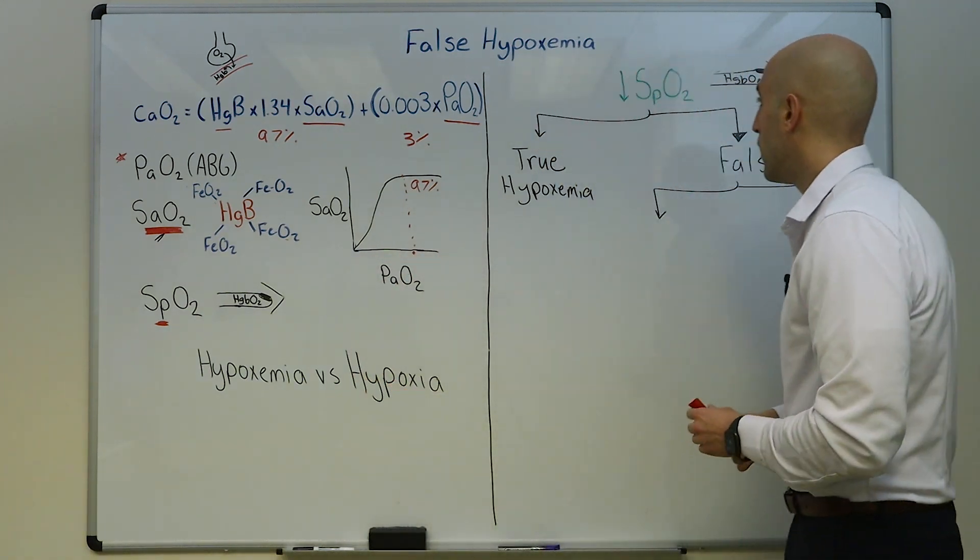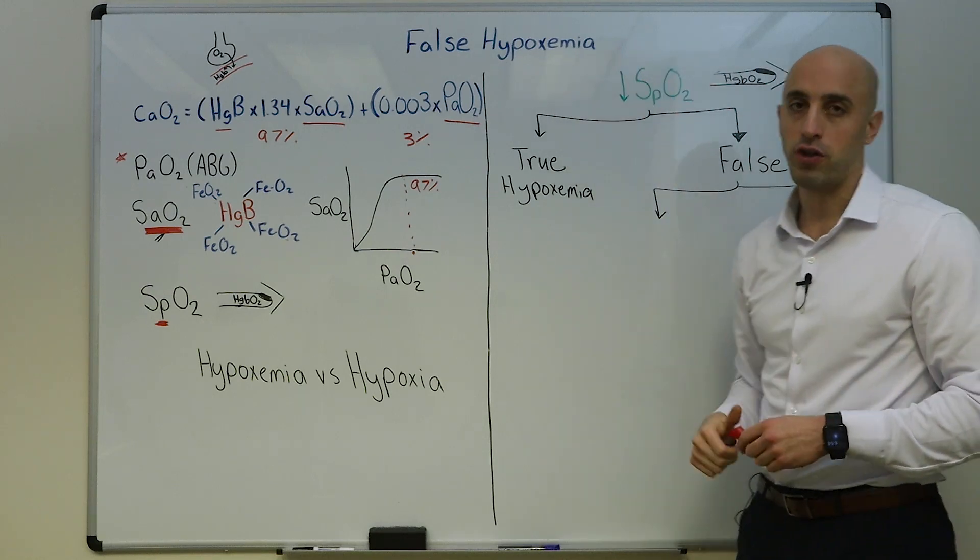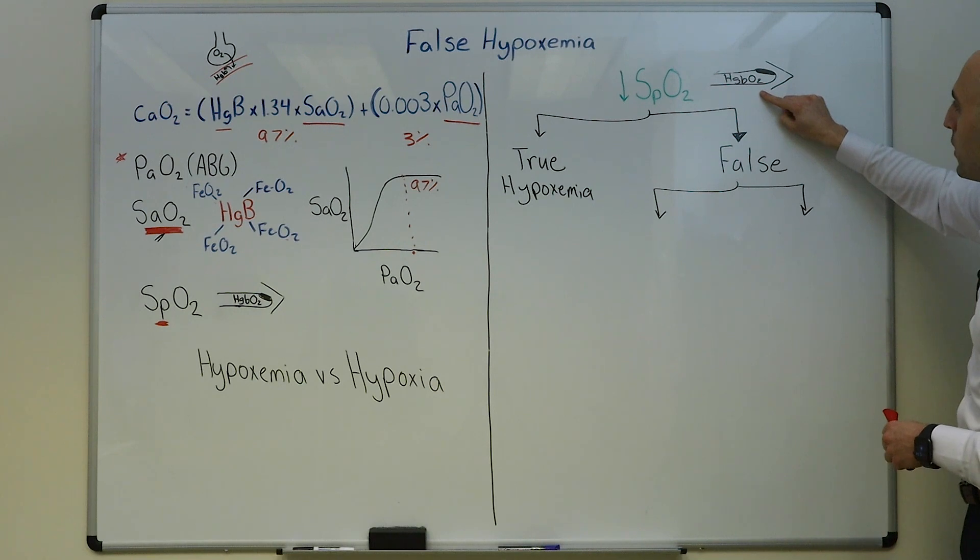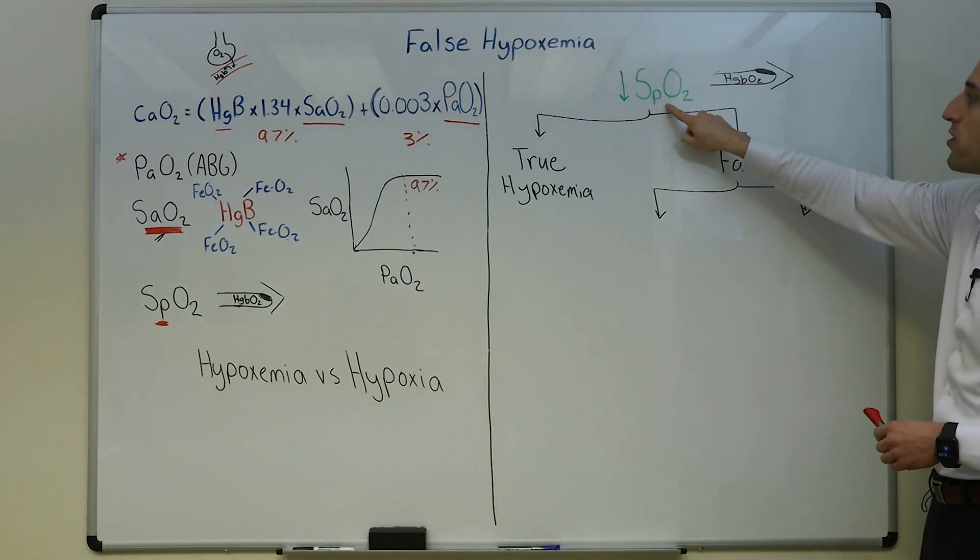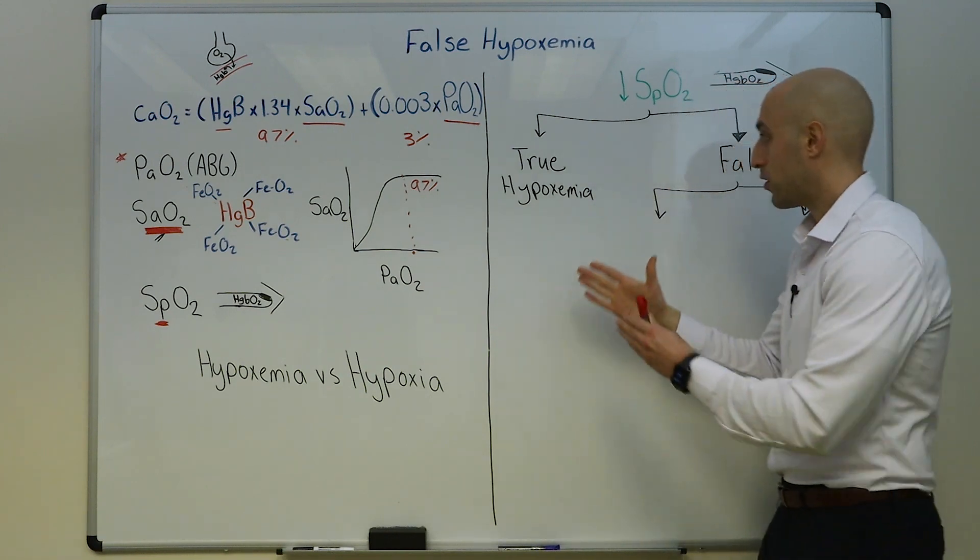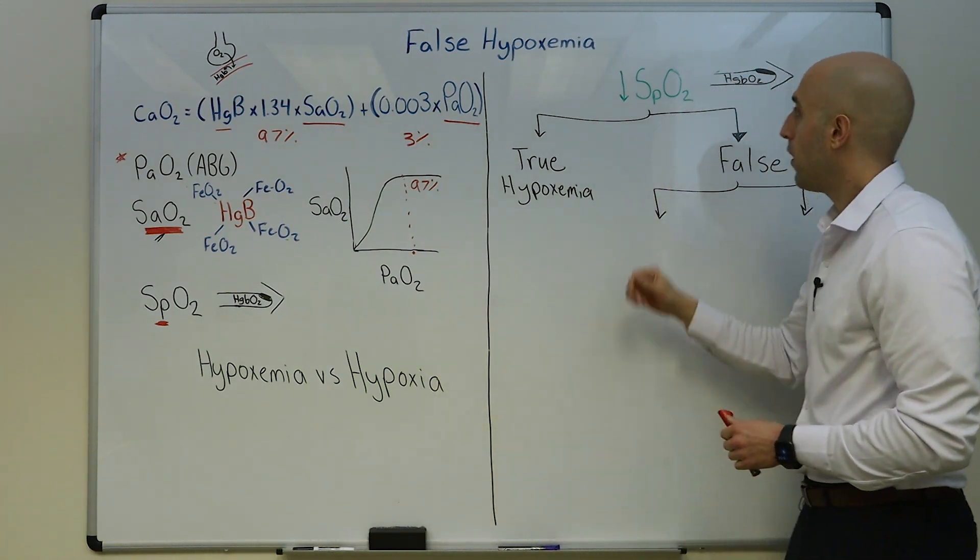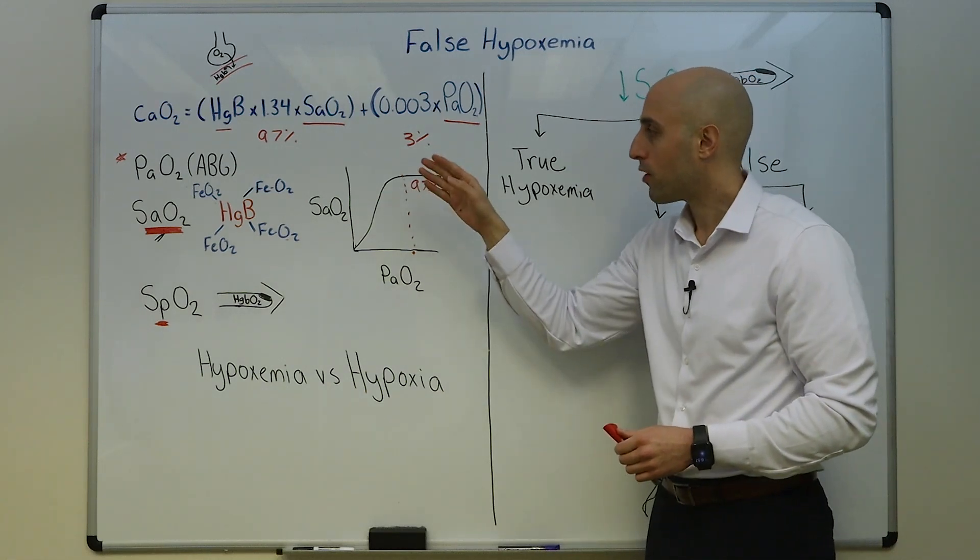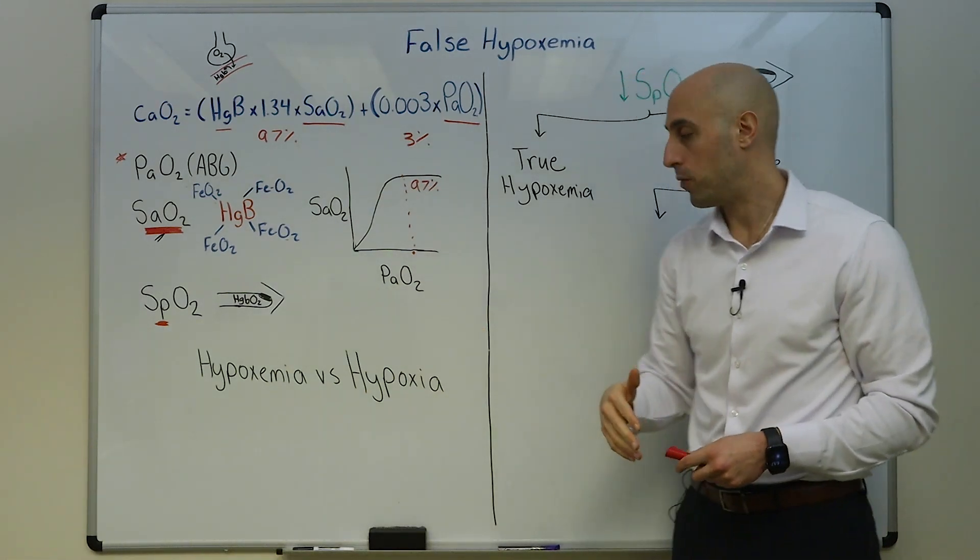And we talked about how the content of oxygen is primarily determined by the number of hemoglobin molecules and the percent saturation of those hemoglobin molecules. The percent saturation can either be estimated on the ABG or can actually be measured on an ABG with co-oxymetry. So now we're ready to talk about false hypoxemia.